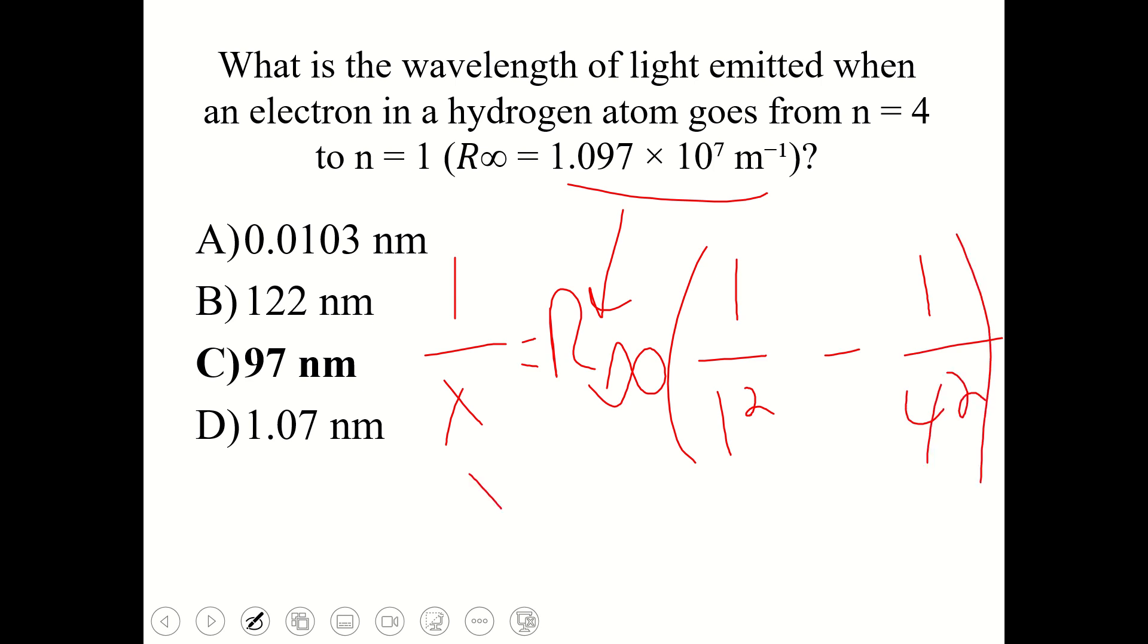So 1 over lambda equals r infinity. The final energy level is 1, so 1 over 1 squared minus 1 over 4 squared. You'd have 1 over lambda equals r infinity, and you would end up getting 15 over 16 when you do LCD and subtract. Plug r infinity in, multiply these two things together, then solve for lambda and convert from meters to nanometers. And you get C, 97 nanometers.